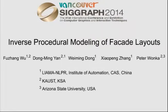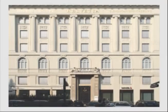How can we generate a shape grammar that encodes a given facade layout? In this paper, we tackle this problem by introducing an approximate dynamic programming framework. We argue that the smallest grammar is usually the most desirable one.